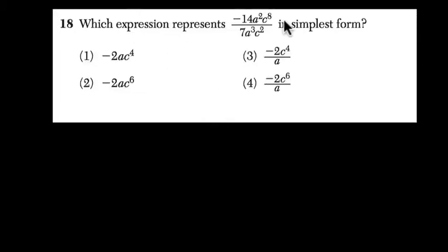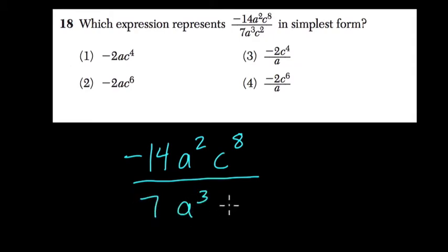Alright, so in this question they ask us, which expression represents this in simplest form? And this is negative 14 times a squared times c to the 8th over 7 a to the 3rd times c squared.